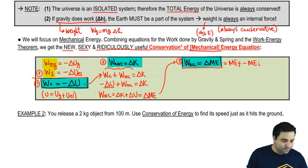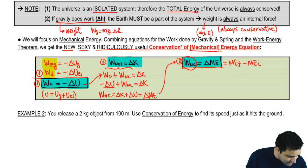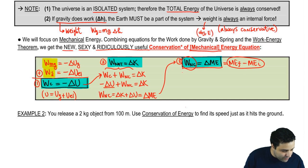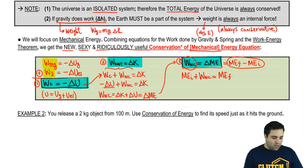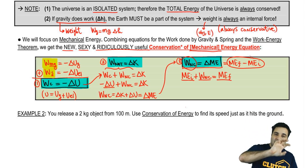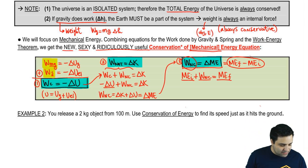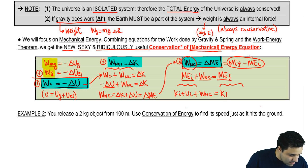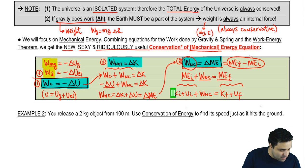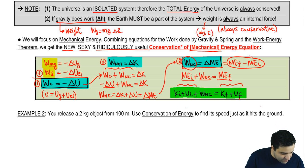The more important result comes from combining everything. Rewriting, the initial mechanical energy plus the work done by non-conservative forces equals the final mechanical energy. Another way to read this is: final energy equals initial energy plus work — work is an addition of energy. Expanding, mechanical energy is made up of kinetic and potential, so: kinetic initial plus potential initial plus work non-conservative equals kinetic final plus potential final. This is the conservation of energy equation.